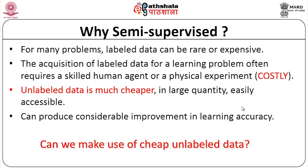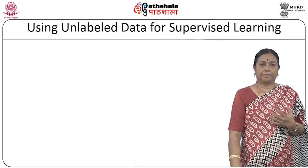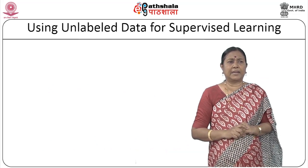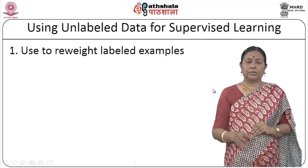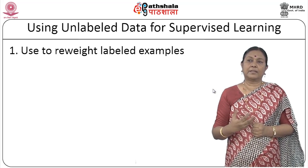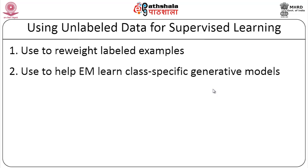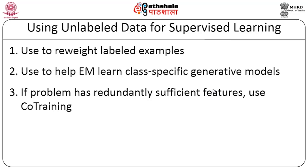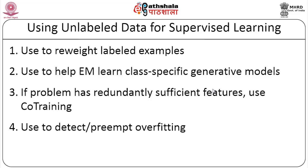Can we make use of cheap unlabeled data for our learning problem? There are different ways of using unlabeled data for supervised learning. One way is to reweight the labeled examples. You can also use unlabeled data to help algorithms like the EM algorithm build class-specific generative models. If the problem has redundantly sufficient features, you can use co-training. You can also detect or preempt overfitting using unlabeled data, since supervised learning with too much data and exact model fitting leads to overfitting.